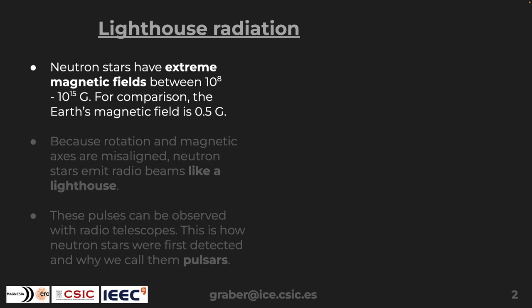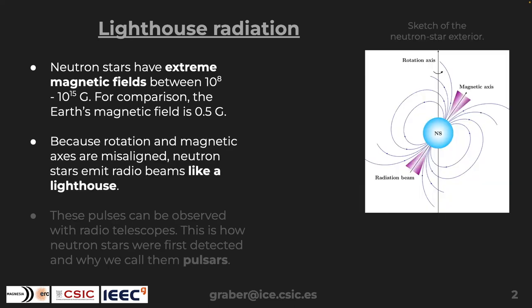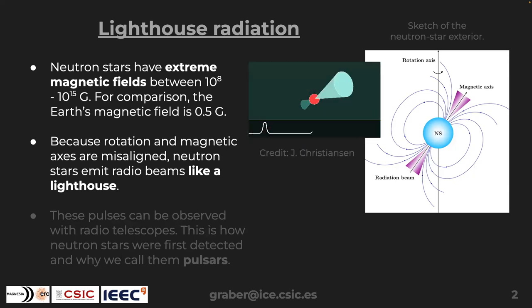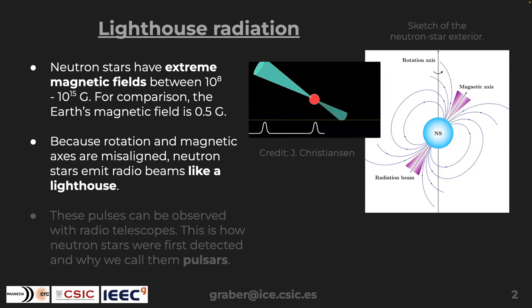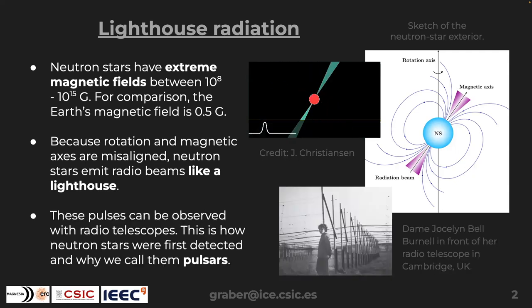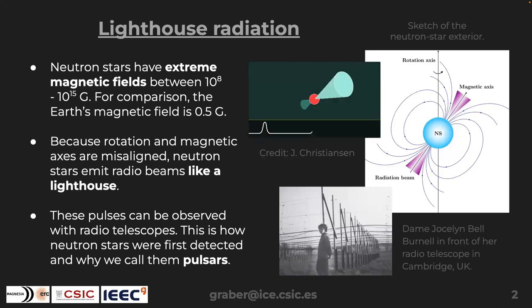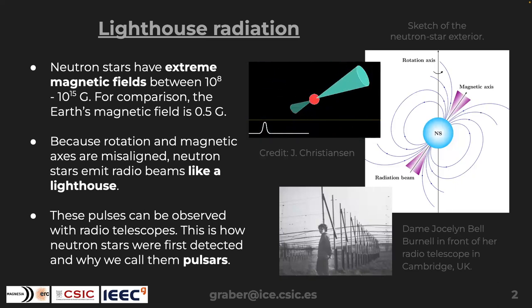Neutron stars unite many extremes of physics. They have extremely strong magnetic fields on the order of 10^8 to 10^15–16 Gauss — Earth's magnetic field is about half a Gauss. They are also fast rotators, and because the rotation and magnetic axes are misaligned, they emit what we call lighthouse radiation: beams in the radio that sweep across the sky. If one sweeps over Earth and we have a radio telescope, we see a periodic increase in flux. Because of this very regular process, these neutron stars are called pulsars.